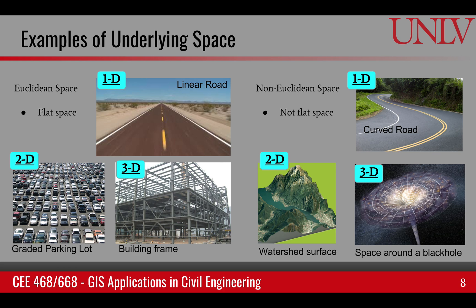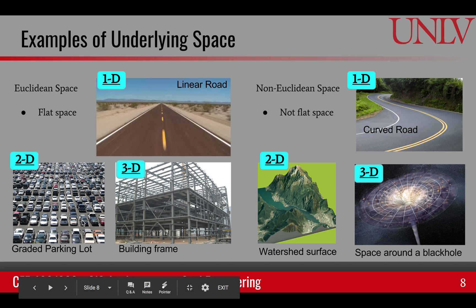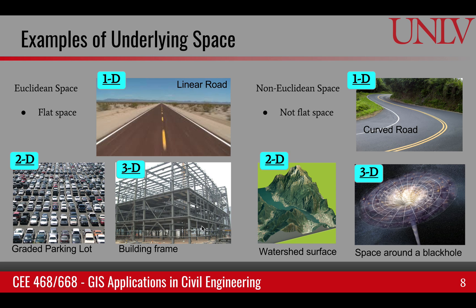Here are examples of Euclidean and non-Euclidean multidimensional spaces. A straight linear road is a 1D flat space. A parking lot is a 2D flat space. A building frame is a 3D flat space. For non-Euclidean space, a curved road means the rules of flat space don't apply. If following waters in a watershed, the surface of the watershed is a 2D non-Euclidean space. And extending to three dimensions, a black hole has a very high concentration of mass, so the space around it is curved — a 3D curved example of non-Euclidean space.